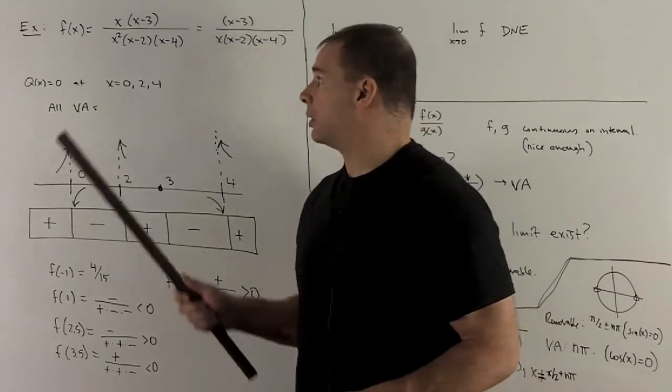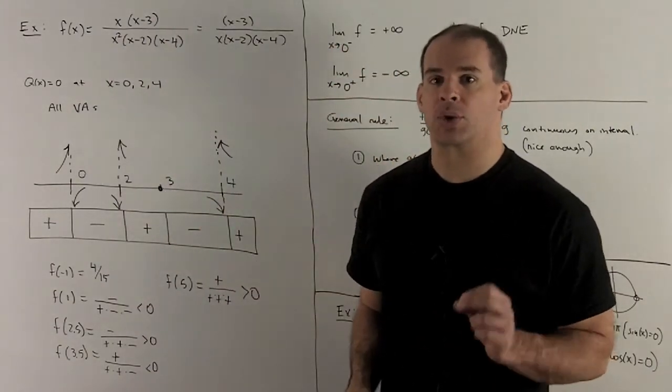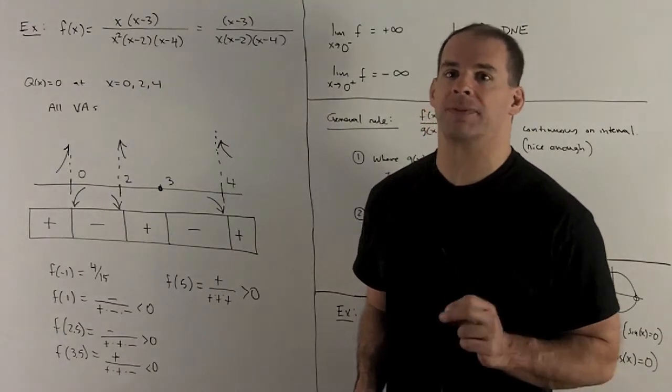Let's look at another example. Look at f of x equal to x times x minus 3, over x squared times x minus 2 times x minus 4.